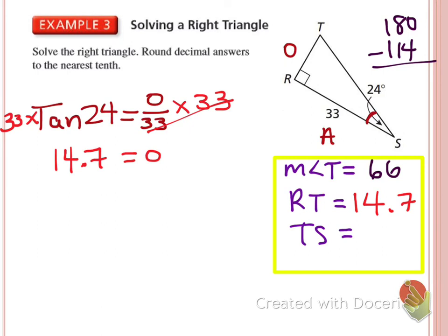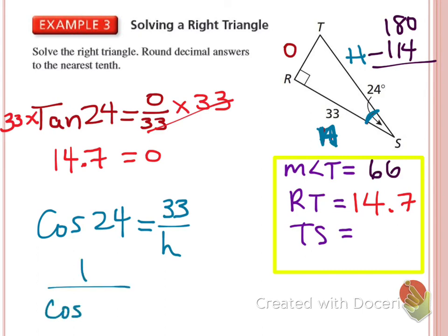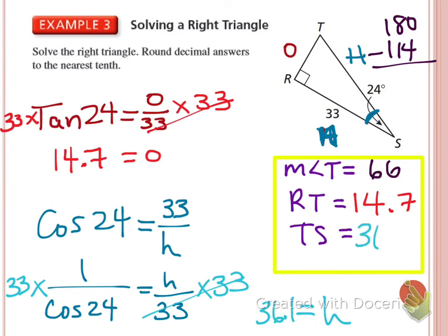And then the last thing to find is the hypotenuse. So again, use the side they gave you, the angle they gave you, and the hypotenuse. So which trig ratio are we going to use? Cosine from 24 equals the adjacent over the hypotenuse. Will I need to flip this one? I will. 1 over cosine 24 equals H over 33. Then multiply by 33. 36.1. Wonderful.